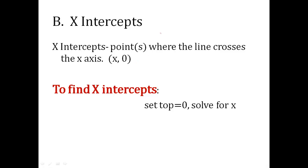For x-intercepts, x-intercepts is the point where the line crosses the x-axis. So if I have a random line here, where it crosses the x-axis is my x-intercept. So my x-value will be something, the y-value will be a 0.